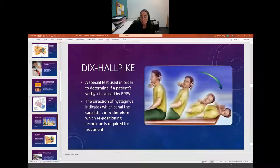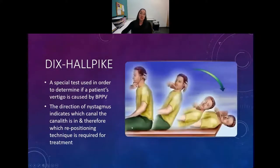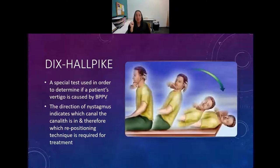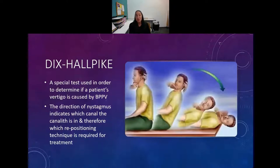The Dix-Hallpike is a special test we do to determine if the patient has BPPV and to determine which canal the canalith is positioned in. Based on where it has moved to, there are different positions we use to reposition it. We have them turn their head, quickly lay back with their head extended over the table, and then we watch their eye movements - tell them to keep their eyes open. Depending on which way the nystagmus goes tells you which canal is affected, so eye movements are key. If the nystagmus and symptoms last more than a minute, this is not BPPV.